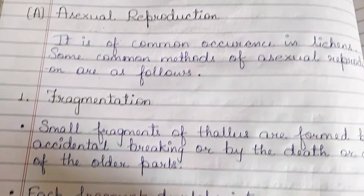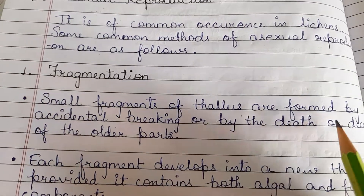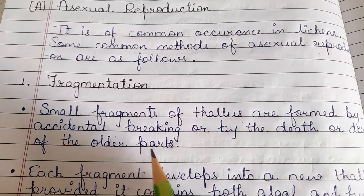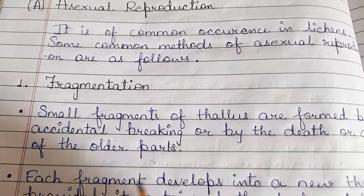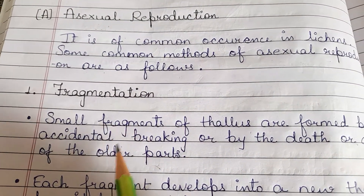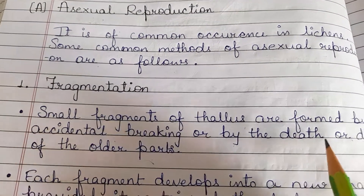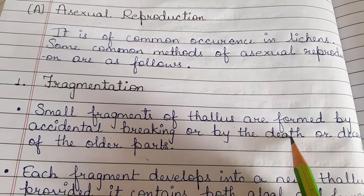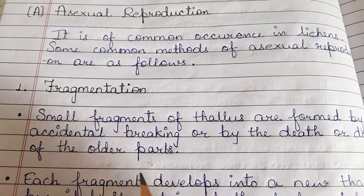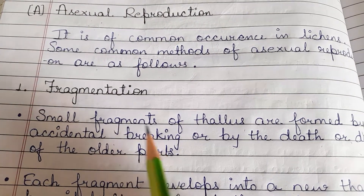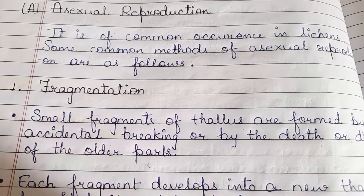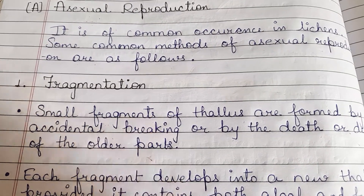First is fragmentation. Small fragments of thallus are formed by accidental breaking or by the death or decay of the older parts. Due to accidental breaking or death and decay, the parent thallus breaks into small fragments.